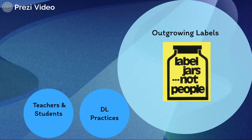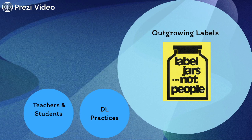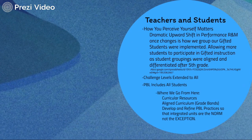The next thing we've been working on is outgrowing our labels. One of the things we like to say is that labels are for jars, not for people. Many of the things we're trying to do address our diverse learners, special education students, and the labeling of students as gifted or non-gifted. We realize that all students are gifted in different capacities — some in math, some in reading, some in mechanical understanding. How we connect to those students and help them demonstrate their gifts is at the core of what we're trying to do.